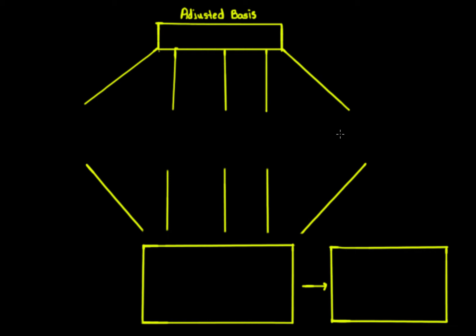Hello, in this video we'll discuss adjusted basis. But first, I want to remind you from the realized gain or loss video the gateway rule. Whenever we have a sale or other disposition of property, we always have to look at the formula: amount realized minus the adjusted basis. This gives us the realized gain or loss — realized gain if it's positive, realized loss if it's negative.